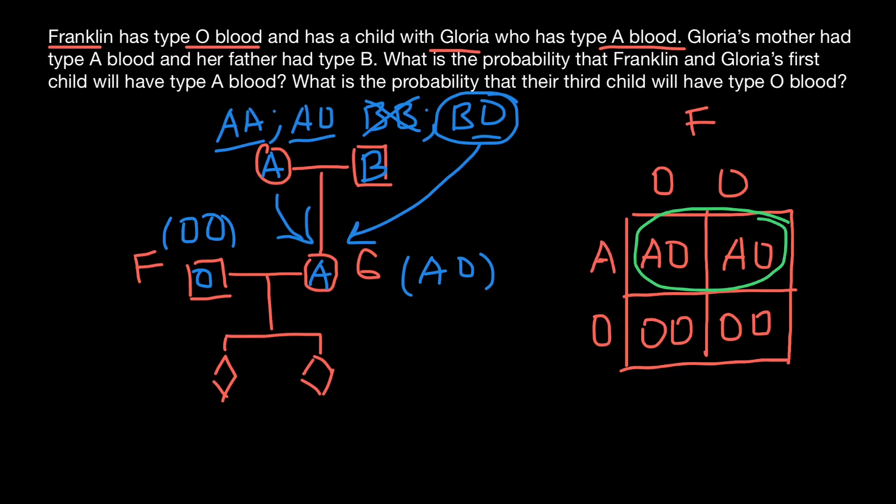And as you see, 50% of their children would belong to the blood group A. And another 50% would belong to the blood group O. Only these two blood groups are possible with probability of their child, regardless of the sex, to belong to the blood group A as 50%. And probability for their child to belong to the blood group O also 50%. So what is our question? What is the probability that Franklin and Gloria's first child will have blood type A? And probability is 50%. This is the answer.